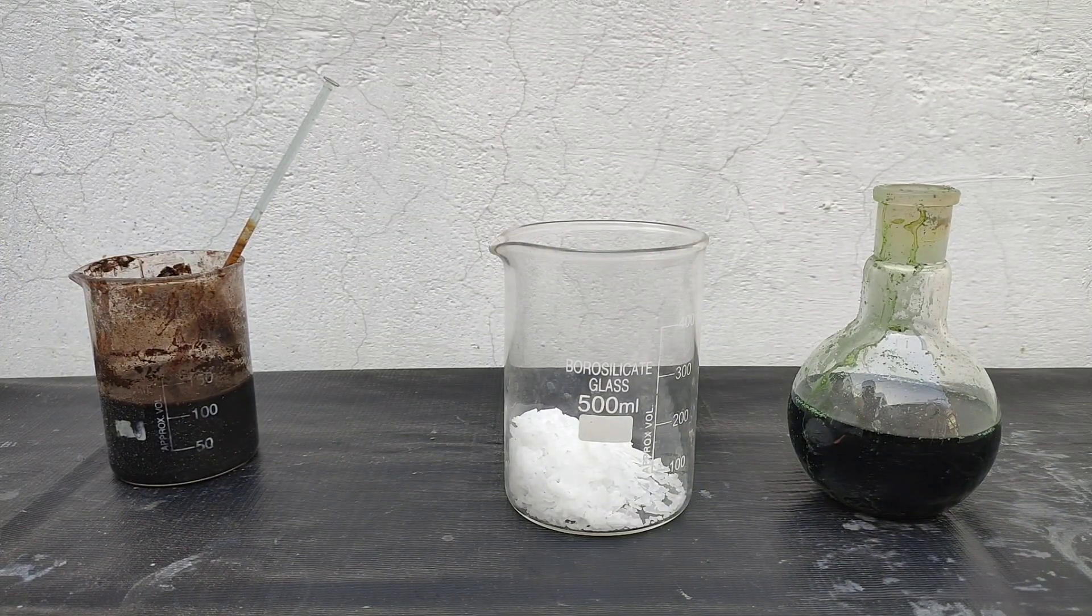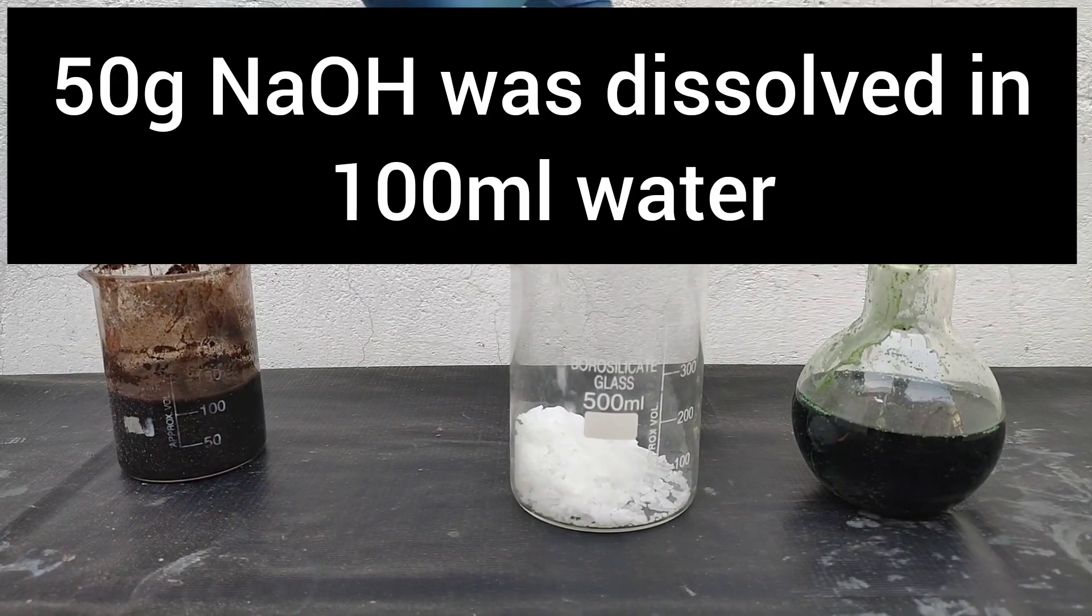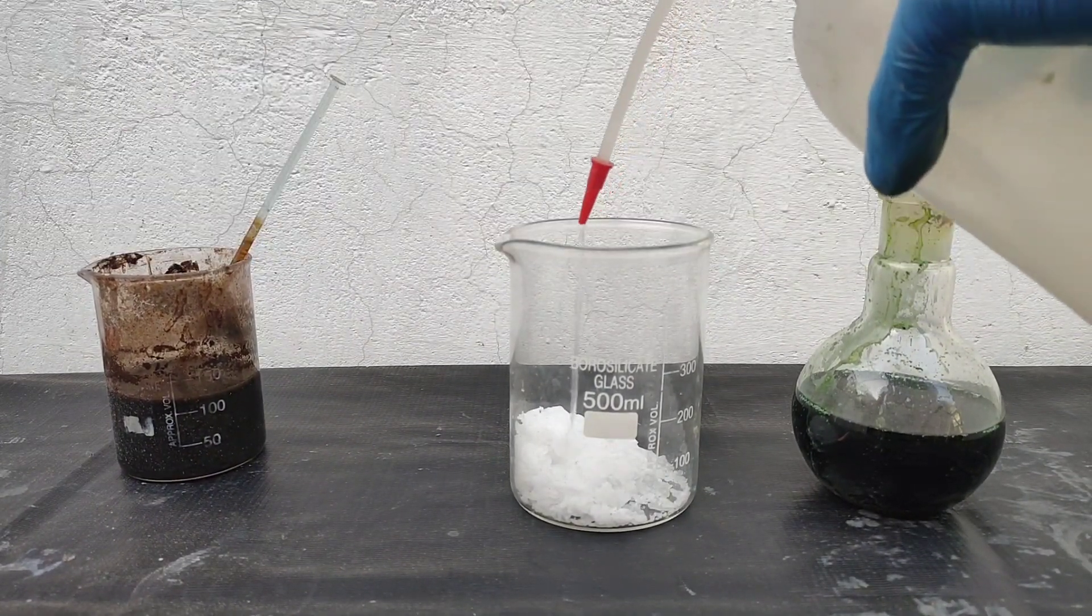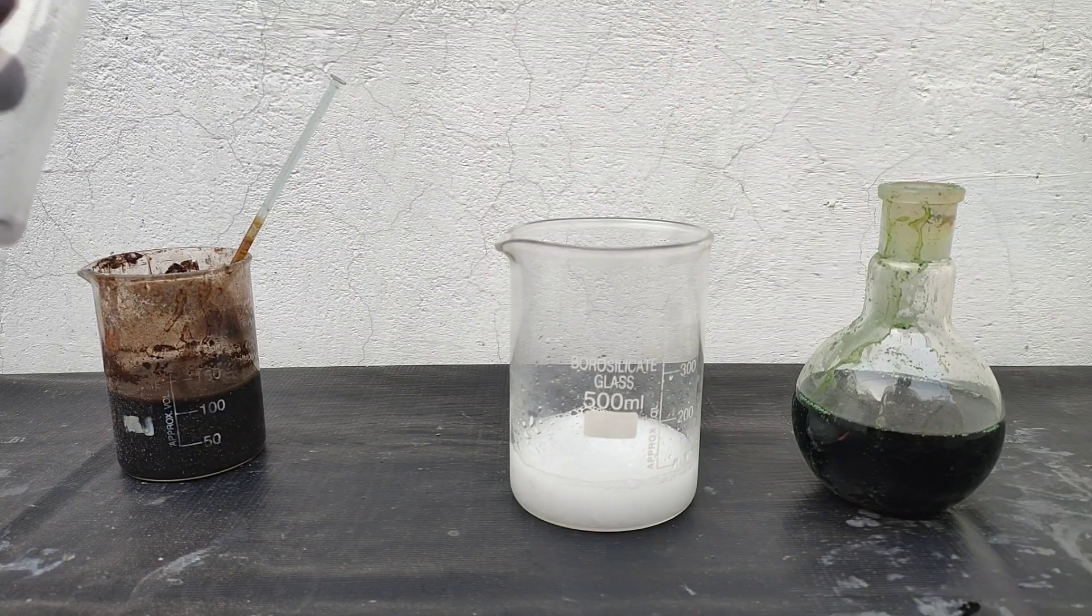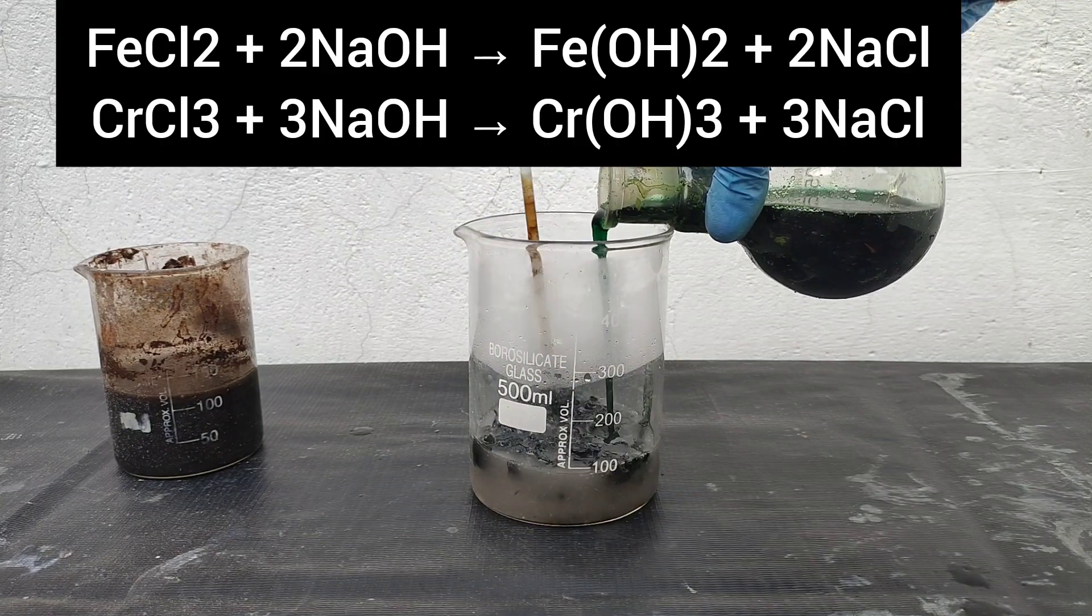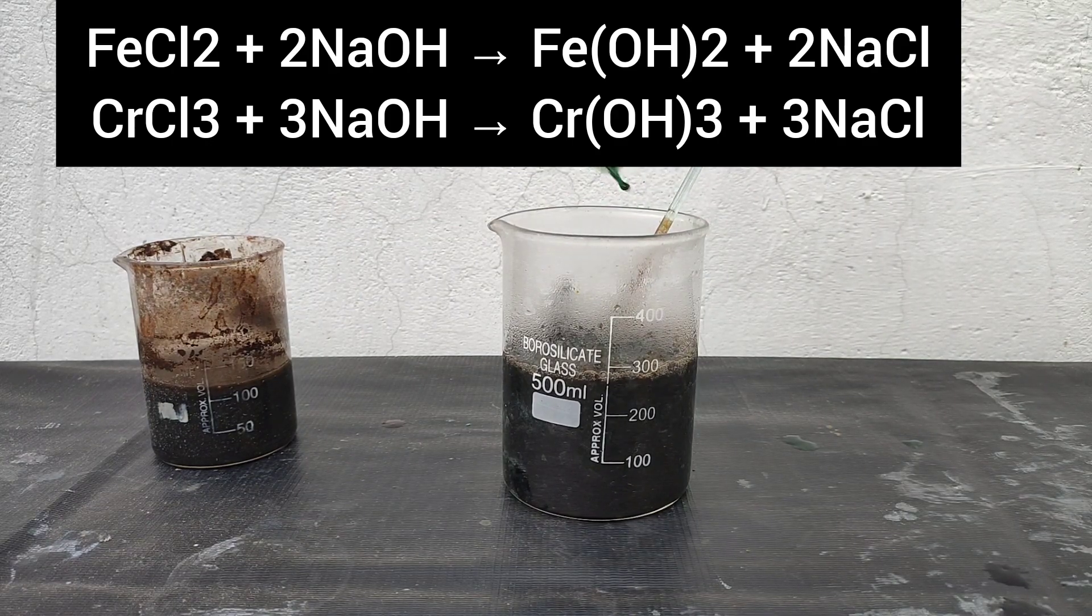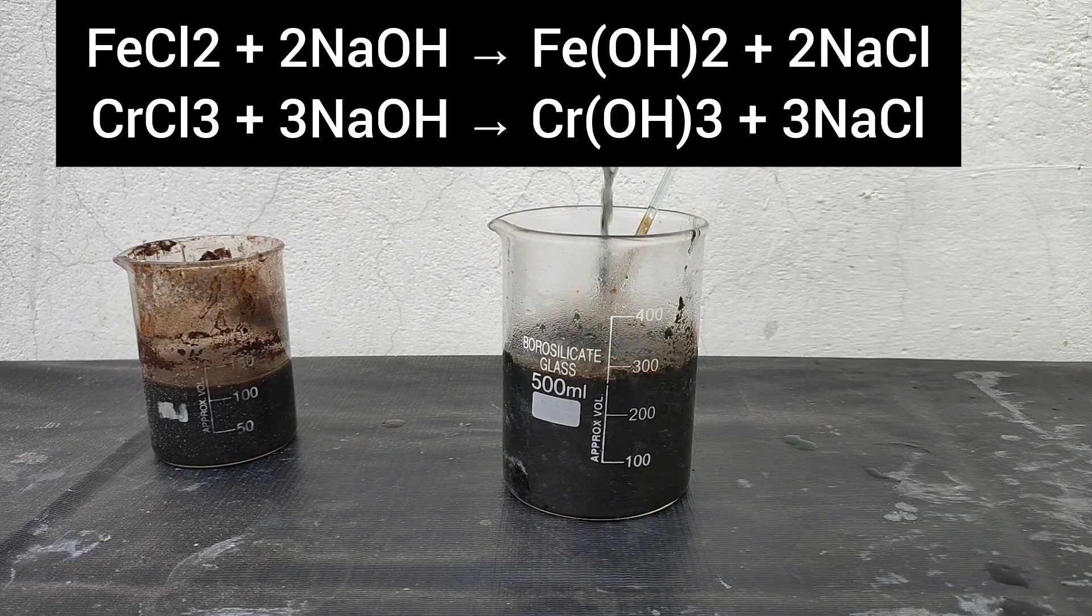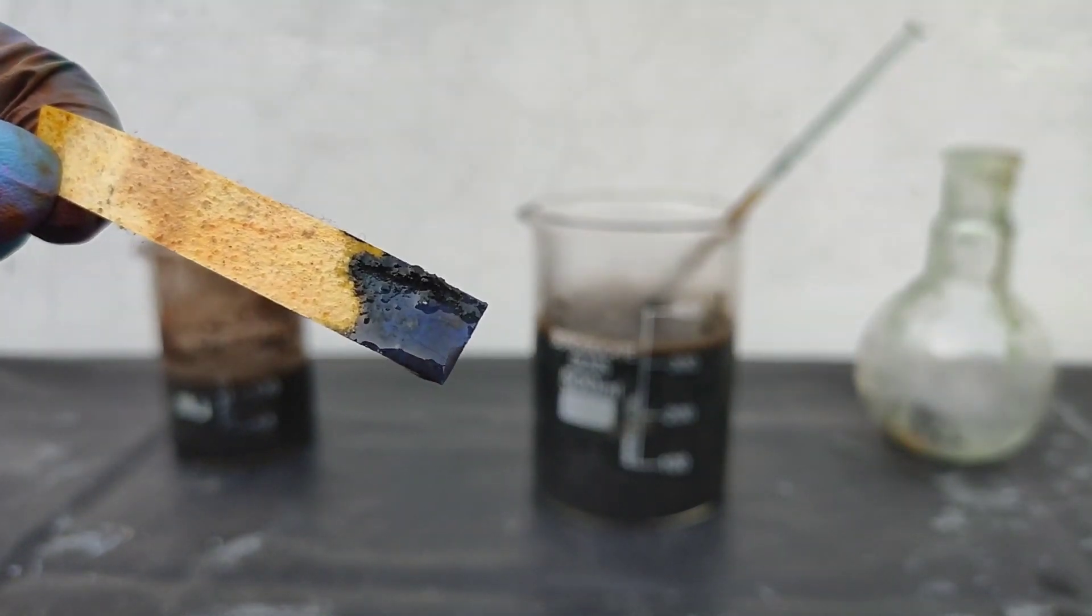Now in a 500 ml beaker, I took 50 gram of NaOH, which is equivalent to the acid used, dissolved it in distilled water, and then with constant stirring I poured all the solution in it. This converts the soluble iron(II) chloride and chromium chloride into ferrous hydroxide and chromium hydroxide. I checked the pH and it showed that it was highly basic.